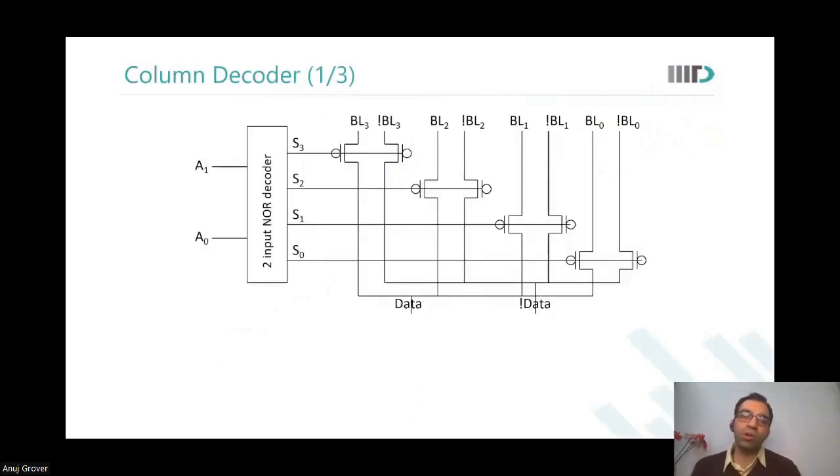So this is a two input node. This is a column decoder of one type, where you have a two input node decoder in the control region. It generates four select outputs, depending on what A0 and A1 are, either of those four outputs would get selected. And you would be able to transfer data to and from the bit lines.